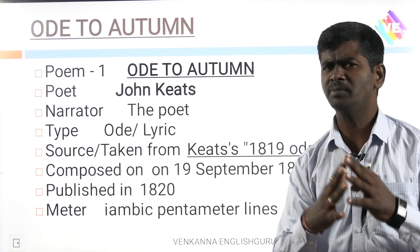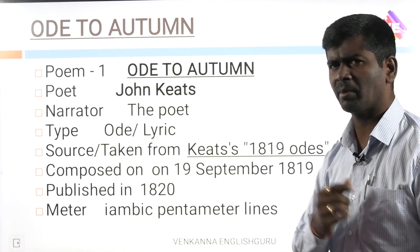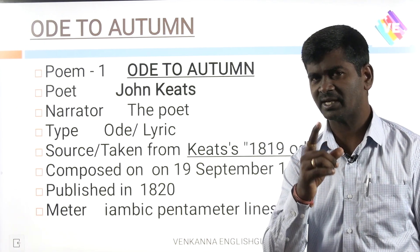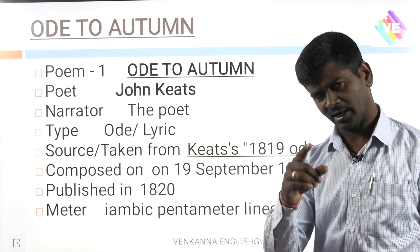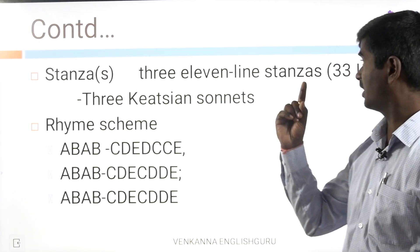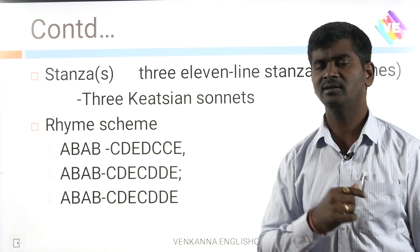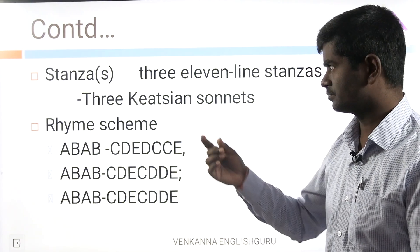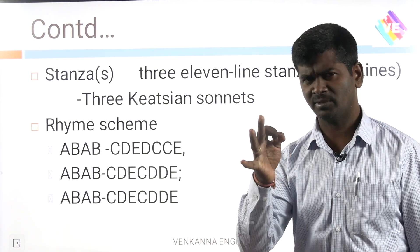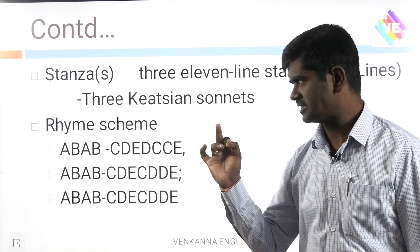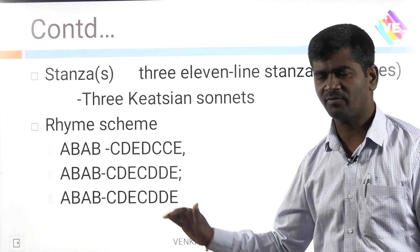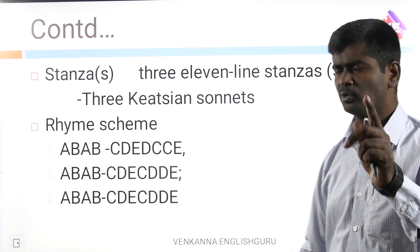Meter: what meter has been adapted by the poet? Iambic pentameter lines. The poem is composed of 33 lines, 11 stanzas, in iambic pentameter — 3 eleven-line stanzas, which you can consider as 3 Keatsian sonnets. Rhyme scheme — this is very important, several times this bit was asked: ABAB CDE DCE. Every stanza will have a different rhyme scheme, you need to know.